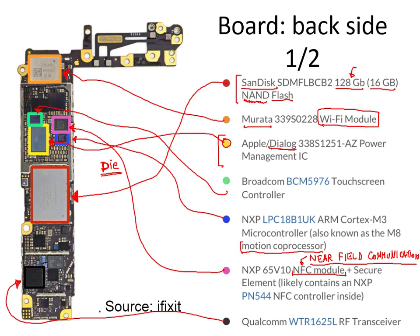Finally, regarding the cellular communication, there is the RF transceiver — transceiver stands for transmitter-receiver. This module handles the radio frequency part of the cell phone communication: the modem does the baseband part, the transceiver does the RF part, the power amplifiers handle the high-power part, and then there is the antenna.